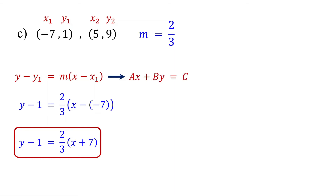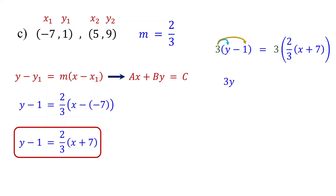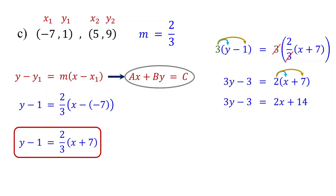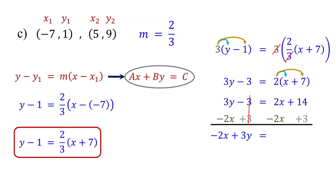To convert to standard form, first eliminate the fraction by multiplying both sides of the equation by the denominator. On the left, distribute the 3. On the right, the 3s cancel, leaving 2 times the quantity x plus 7. Now distribute the 2. In standard form, the variable terms are on the left and the constant is on the right. So subtract 2x from both sides and add 3 to both sides. On the left, these cancel leaving negative 2x plus 3y. On the right, these cancel leaving 14 plus 3, which equals 17.